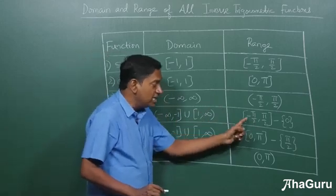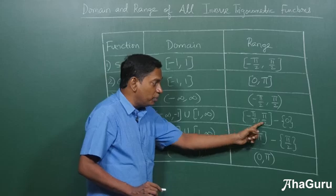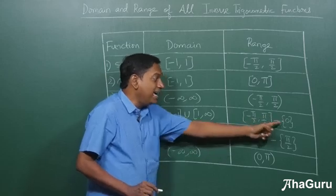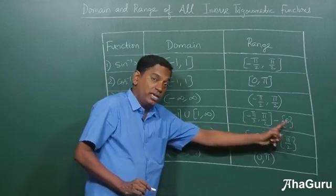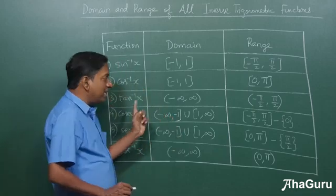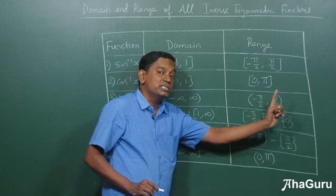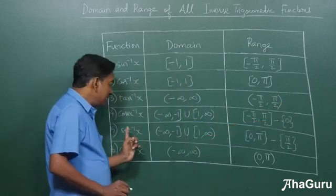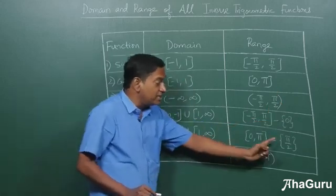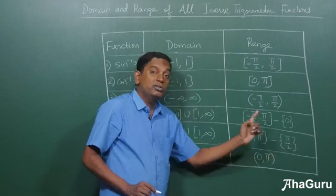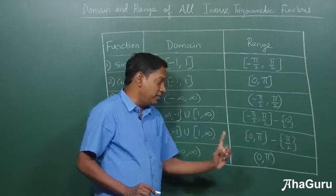Again, the range is between minus pi by 2 to pi by 2 closed interval except for the value 0. So cosecant inverse can never return the value 0, because cosecant 0 is undefined. Similarly, secant inverse x can never return the value pi by 2, because secant pi by 2 is undefined.